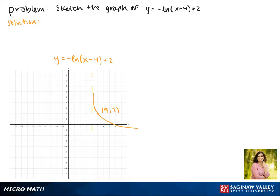Notice that our asymptote shifted along with our function, so this is the graph of our function.